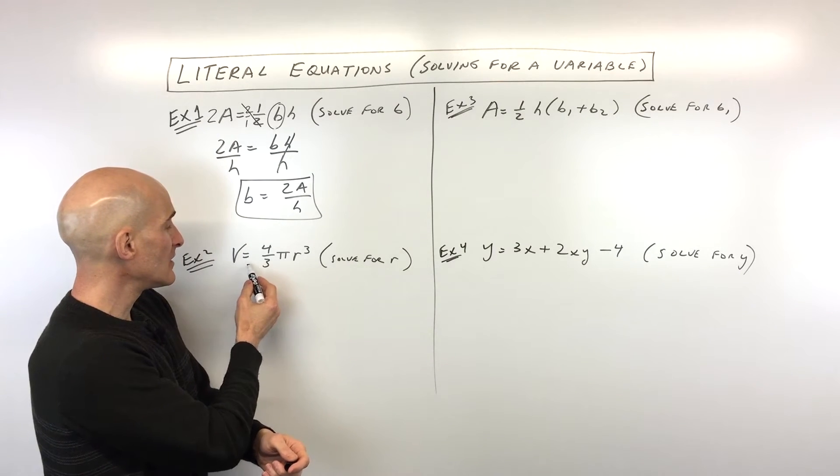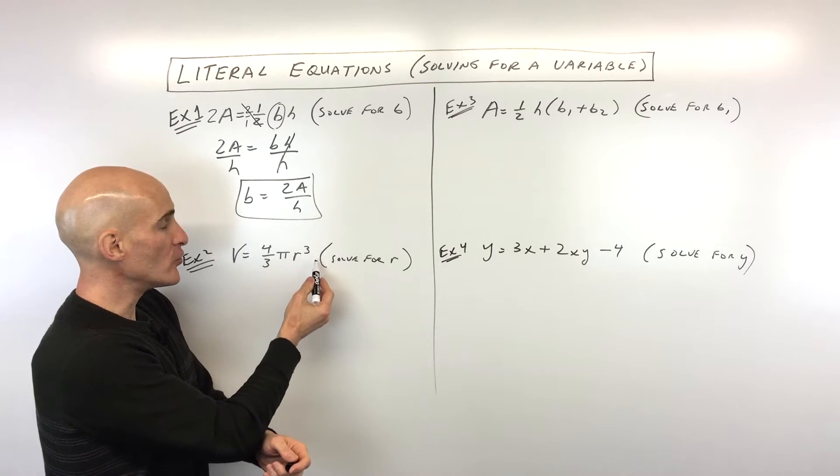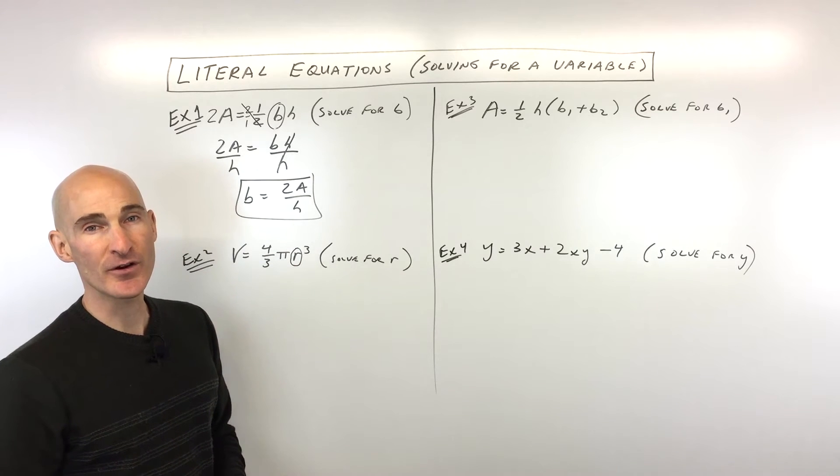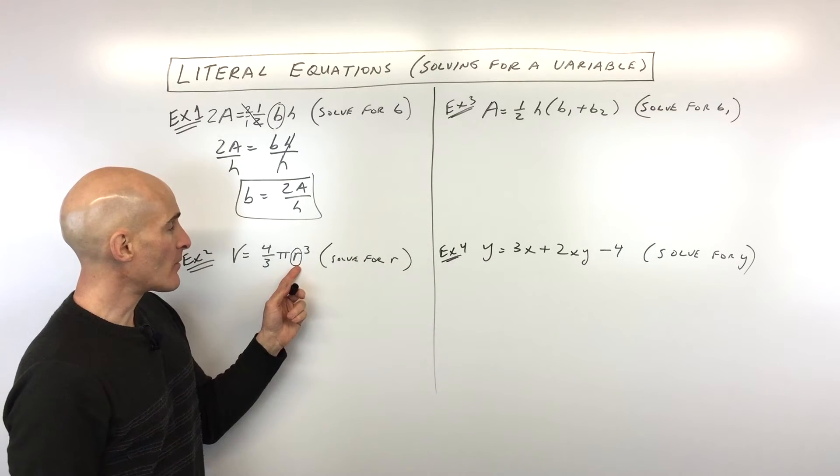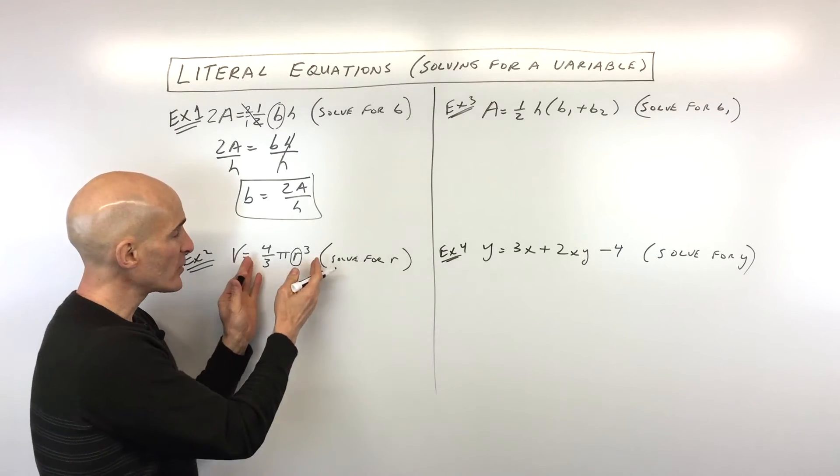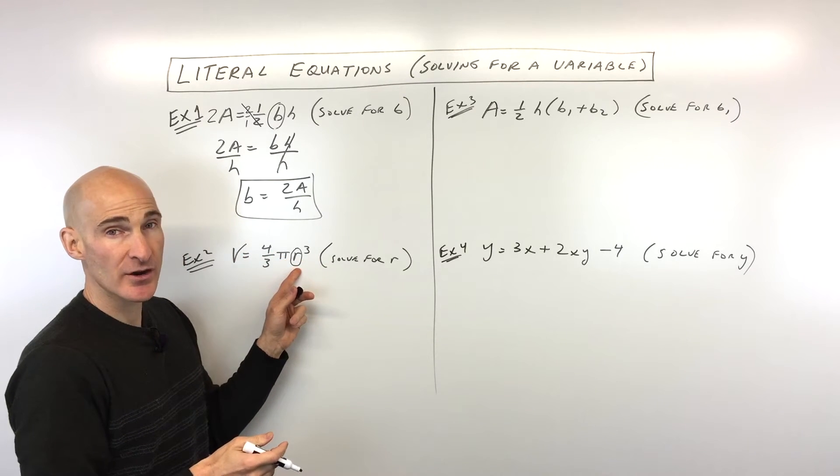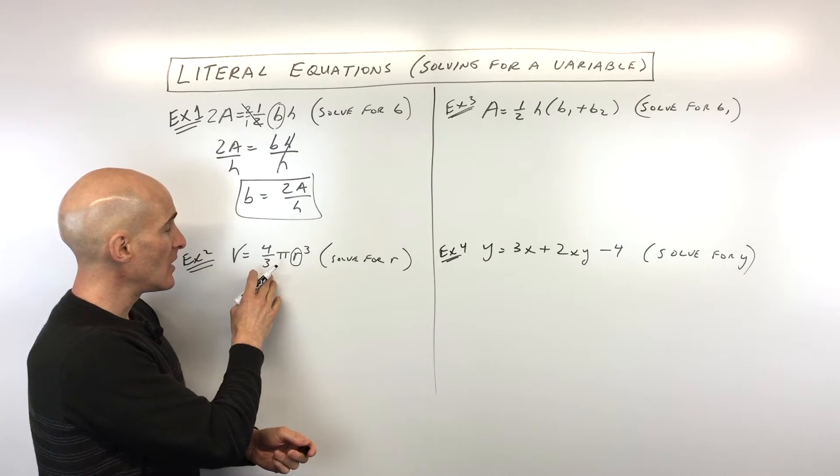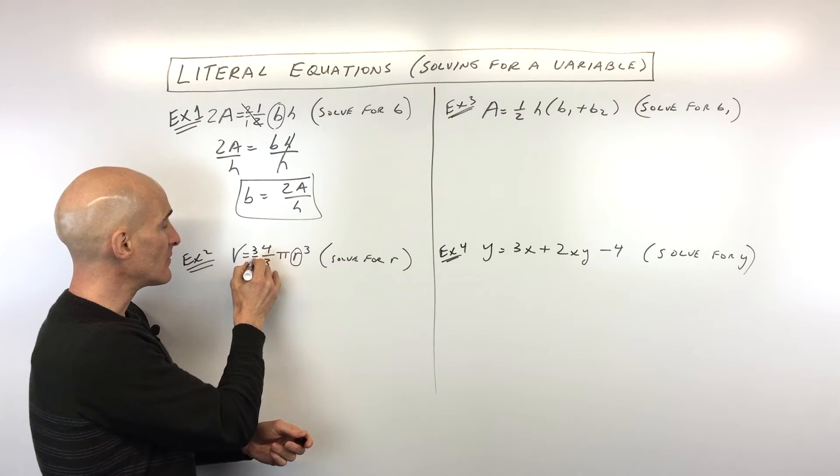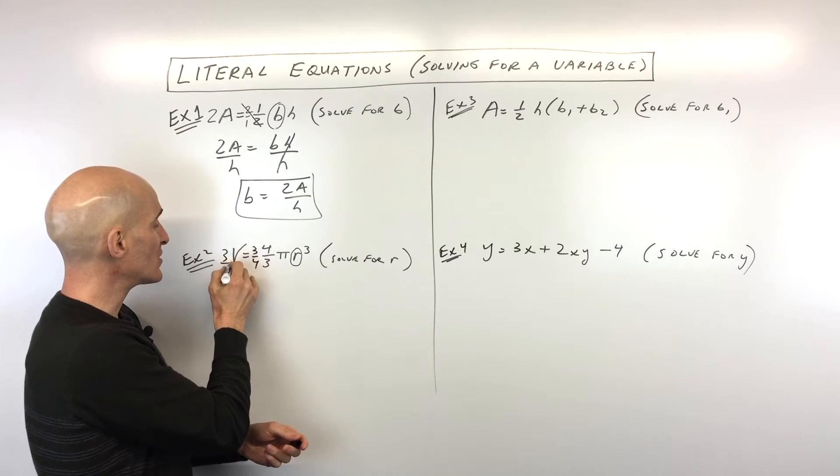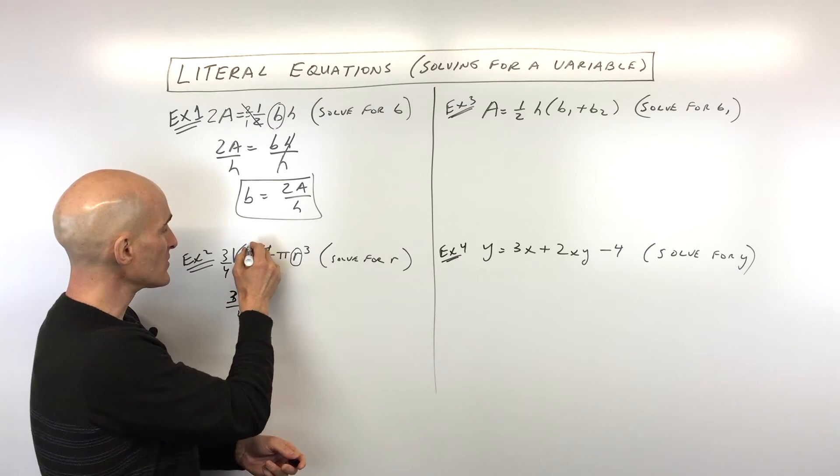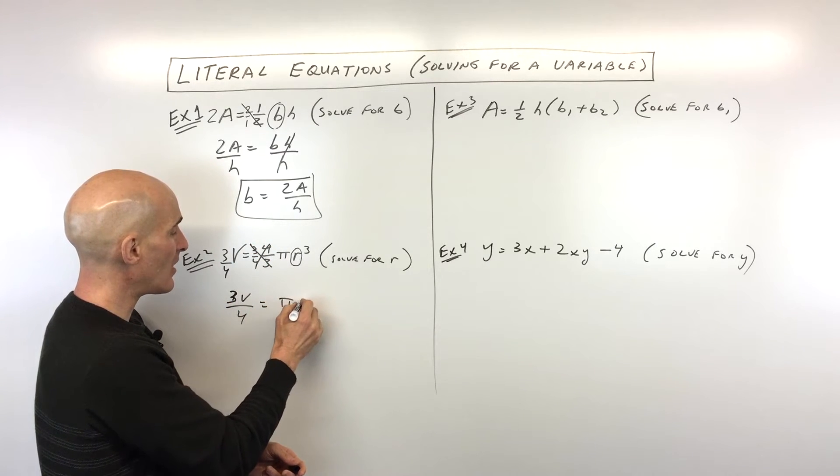We've got V equals four-thirds pi R cubed. Solve for R. So you might recognize this formula. It's the formula for the volume of a sphere, right? So how do you get the R by itself? We're going to use that same technique of working from the outside in towards our desired variable here. How do we get rid of the four-thirds? You could divide by four-thirds, or you could do the opposite, multiply by the reciprocal. So we could just go ahead and multiply both sides by three-fourths. So we've got 3V over 4 equals, these are canceling, we get pi R cubed.